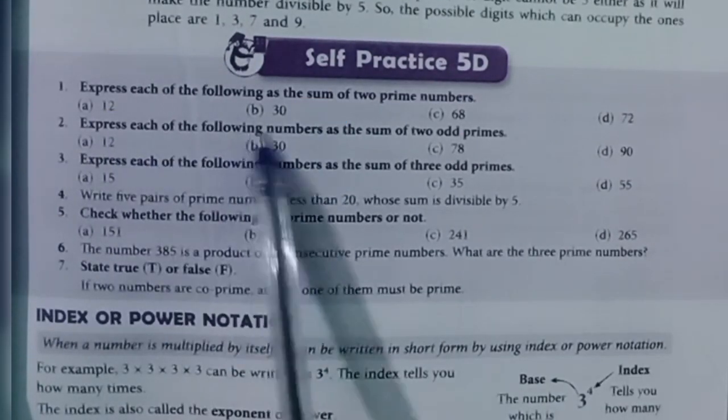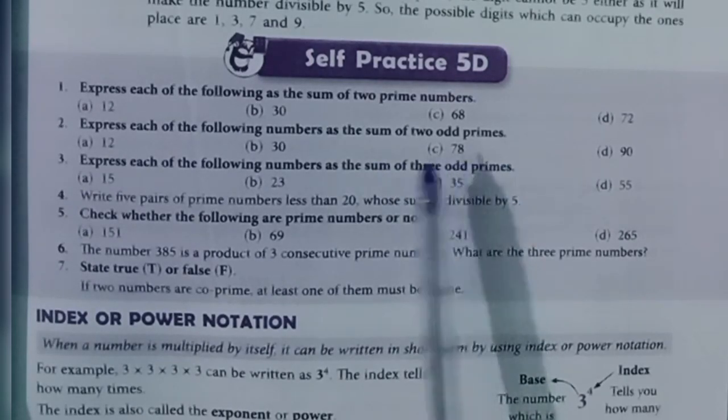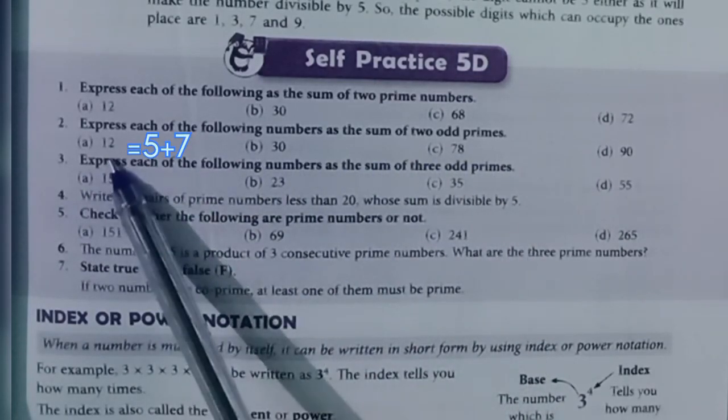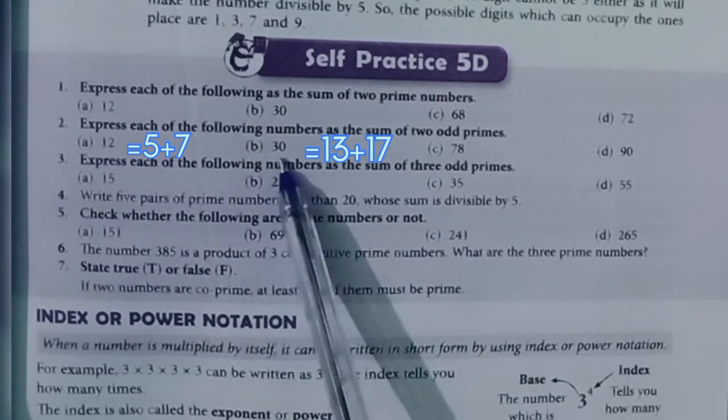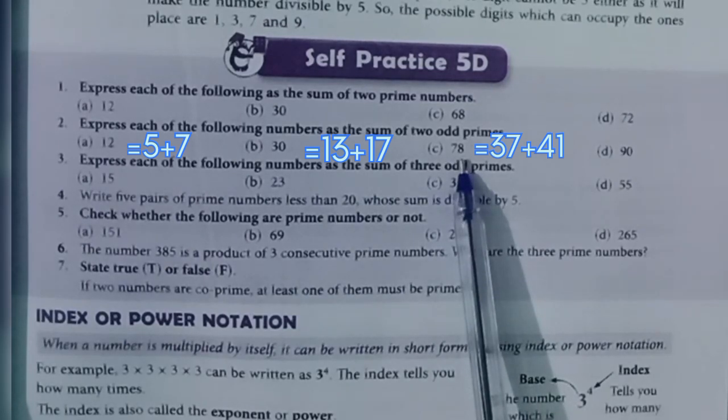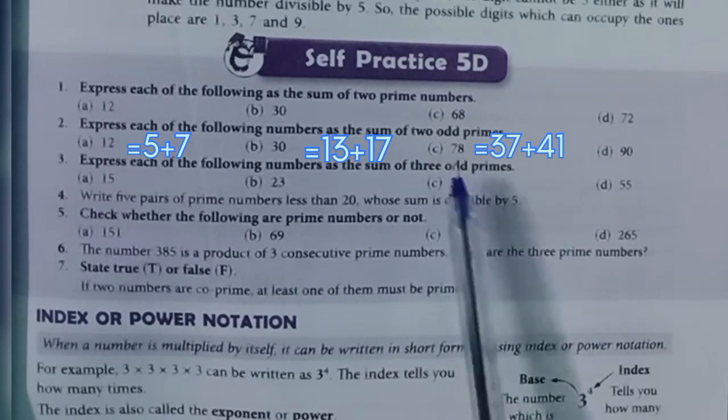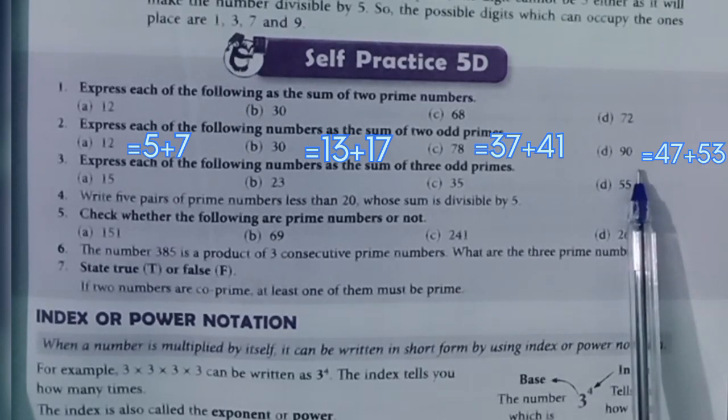Question 2: Express each of the following numbers as the sum of two odd primes. A. 5 plus 7. B. 13 plus 17. C. 37 plus 41. D. 47 plus 53.